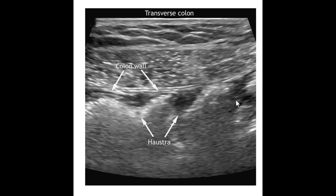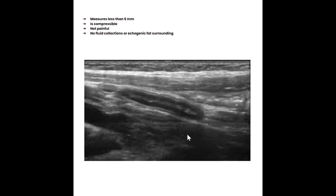Here we have a normal appendix. The normal appendix can be a little bit difficult to find, but we want to take a good look through the right lower quadrant. We're going to typically see it near the psoas muscle and the right iliac vein and artery. We want to prove that the appendix has a blind end — that proves it is not just a loop of small intestine, that we are indeed seeing the appendix. We also want to follow it all the way back to the cecum and show where the cecum and ileum connect. Appendix exams definitely get much easier the more you do them.